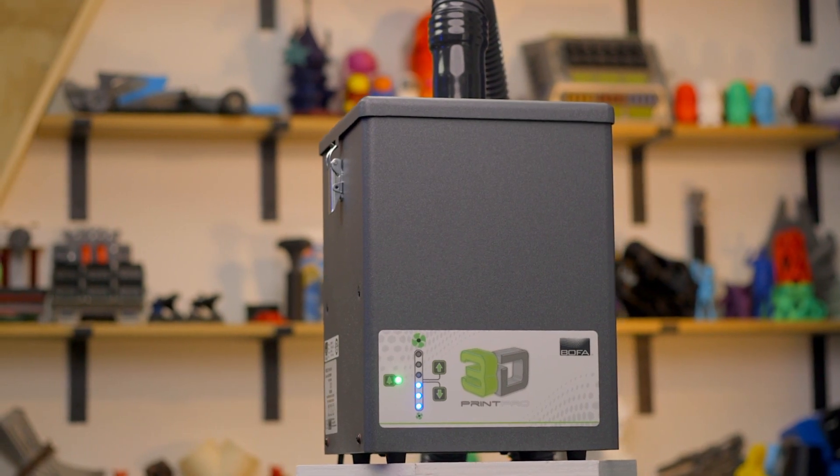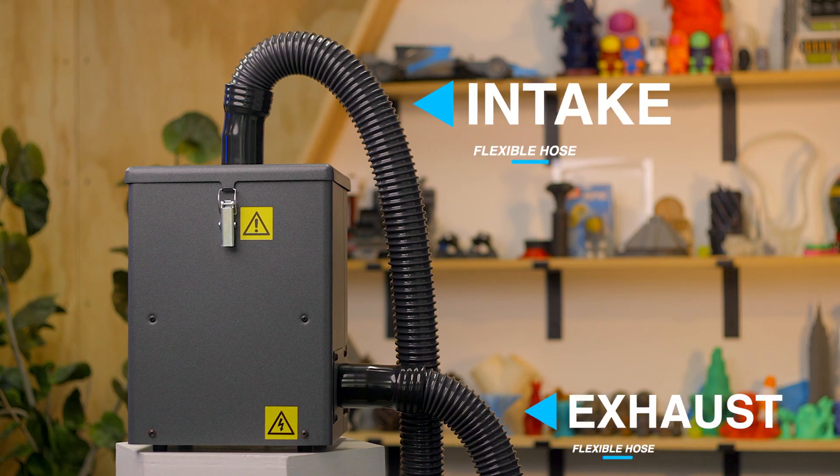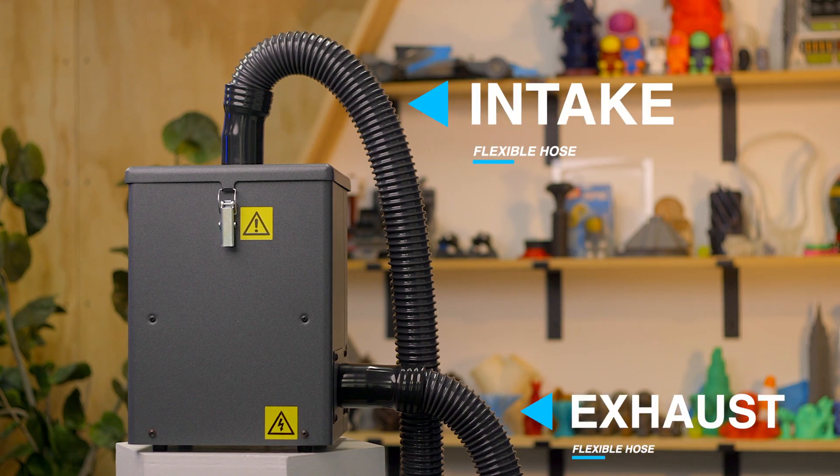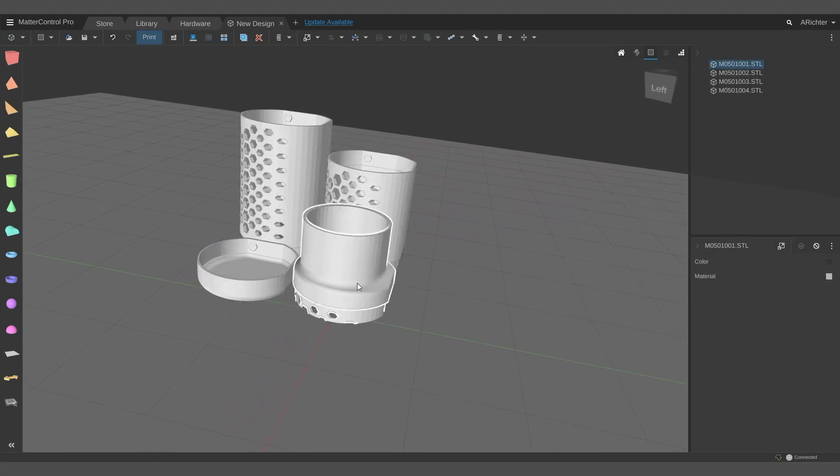Depending on your individual application, there are different ways you might want to set up the Print Pro 3. It comes with two flexible hoses, one for exhaust and one for intake, and free 3D printable files for you to customize the connection with your 3D printer.